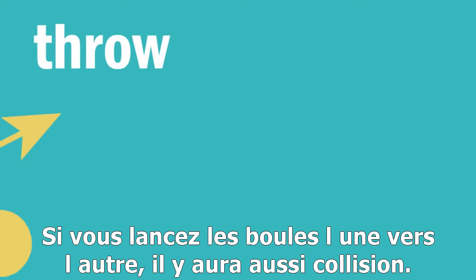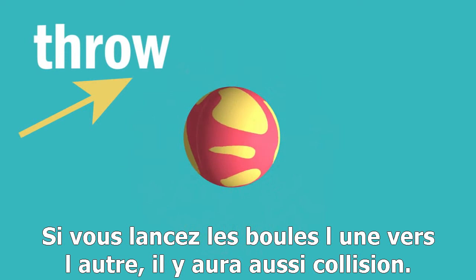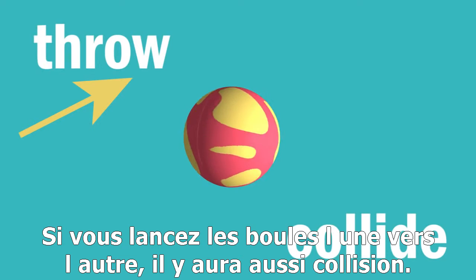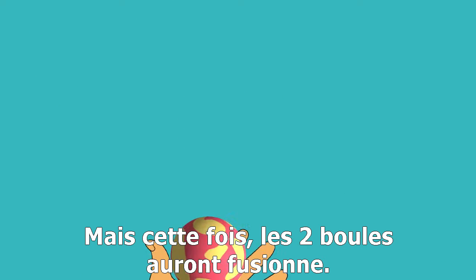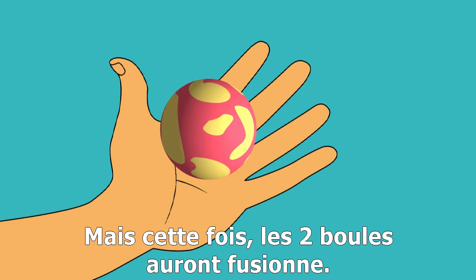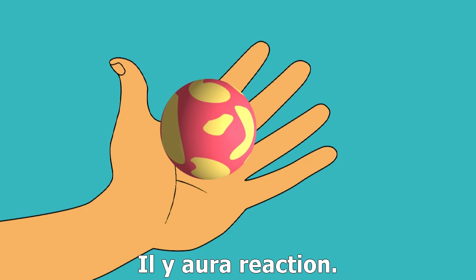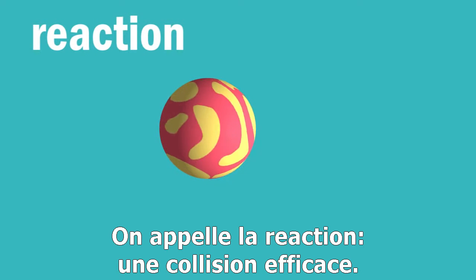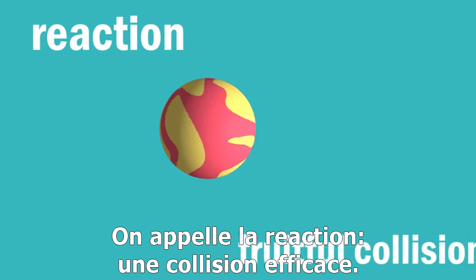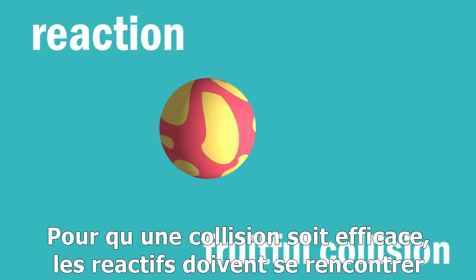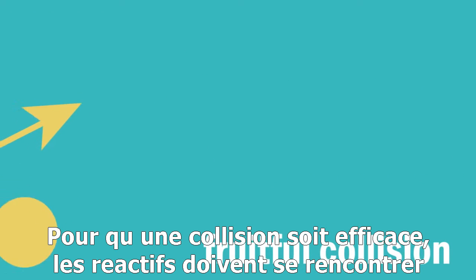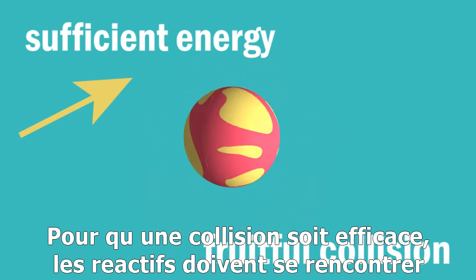If you throw the ball of yellow plasticine at the ball of red plasticine, again they will collide. But this time, if you pick up the ball of yellow plasticine, the ball of red plasticine will be stuck to it. There has been a reaction. We call a collision that results in a reaction a fruitful collision. So, for the collision to be fruitful, the reacting particles must collide with sufficient energy.